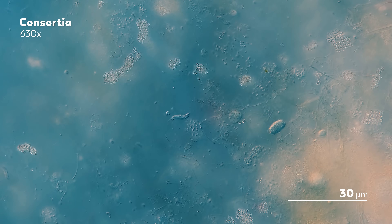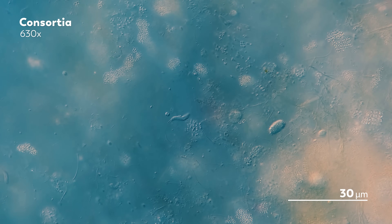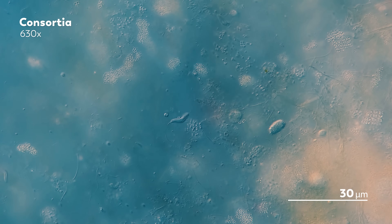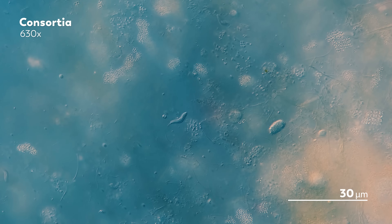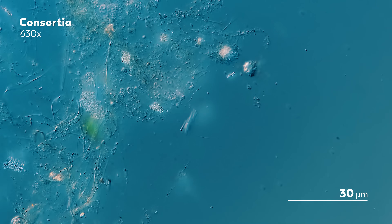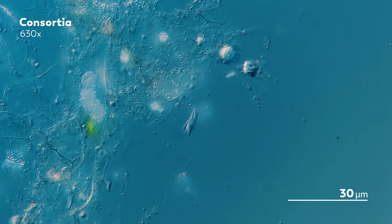First, not all consortia are green. Some are more like the colorless squiggle you see in the middle of your screen, made up of thin, curved prokaryotes gathering around a central bacterium that has flagella at both ends. And consortium is kind of a funny word to describe bacteria, isn't it?